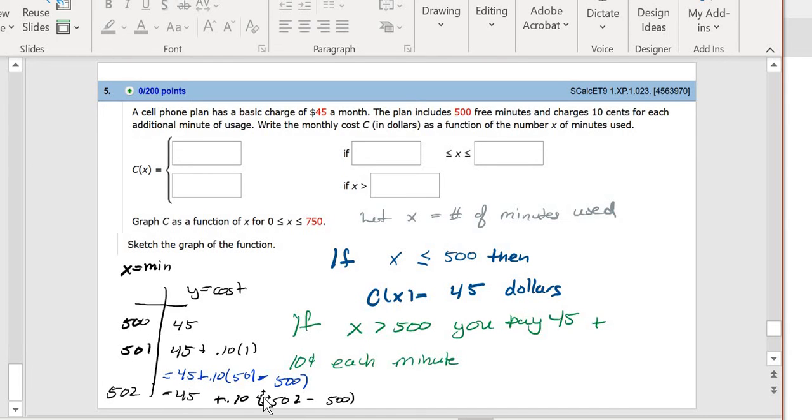X is the number of minutes, right? So I need to somehow get that involved. Really I can see that if I go to the next one, this will just be replaced with 503, and so my x goes right here where the 502 was. So C(x) is 45 plus 10 times x minus 500. I got that from seeing the table. When x is between 0 and 500, I get 45, and then after 500 I get this.